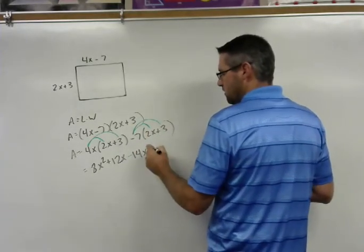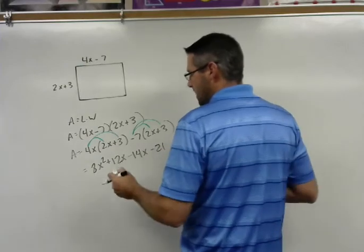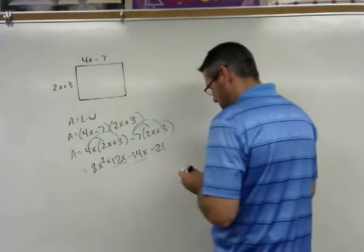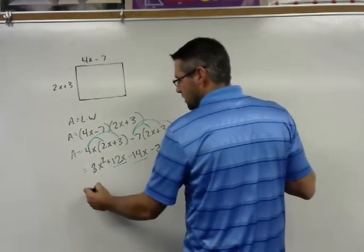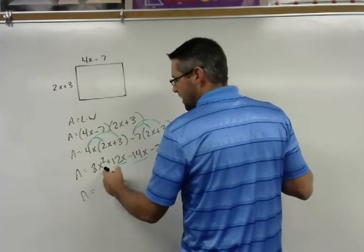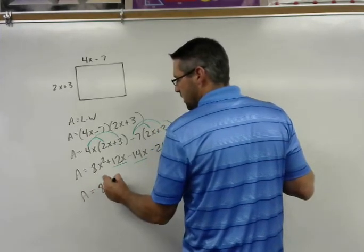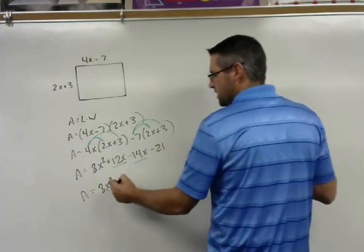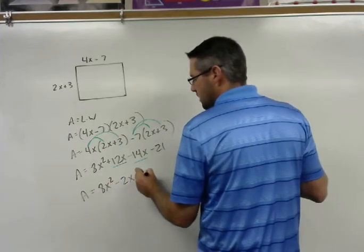And then we'll go ahead and combine like terms. The only like terms we have are the 12x and the negative 14x, and because we want to put this in standard form, we're going to write the highest exponent first. So we got 8x squared, 12x minus 14x is negative 2x, and then minus 21.